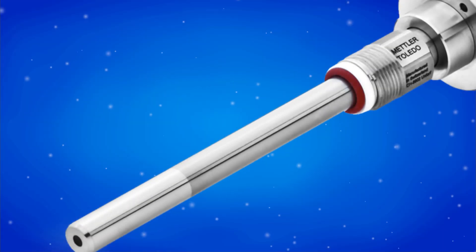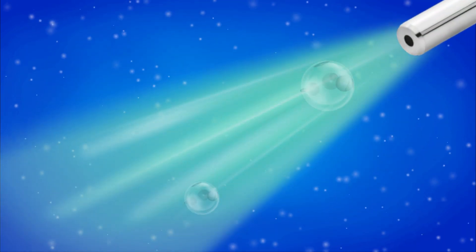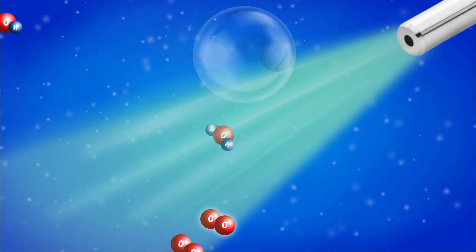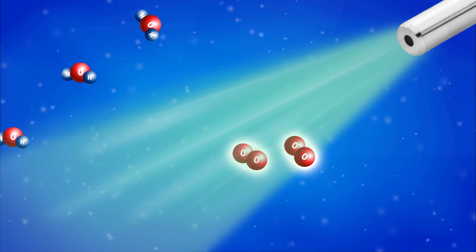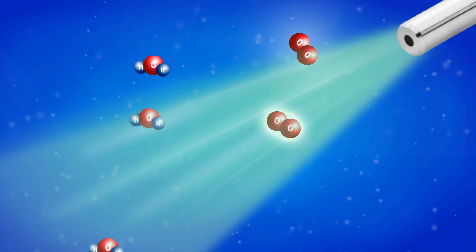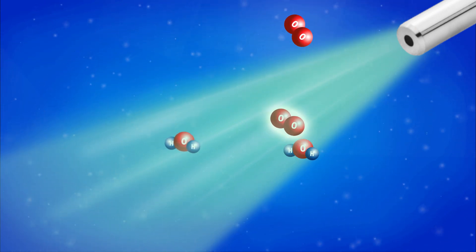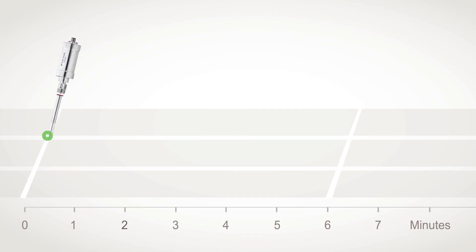Unlike traditional DO sensors, the Mettler Toledo Thornton Online Pure Water Optical DO sensor does not require polarization. It uses optical technology to provide fast and accurate analysis. Its measurement response is six times faster than polarographic sensors.